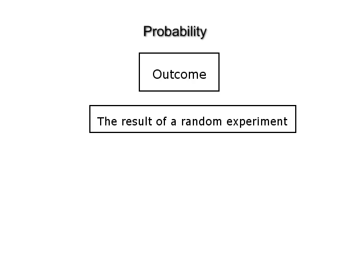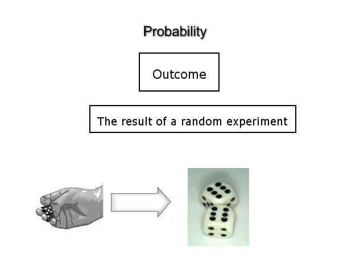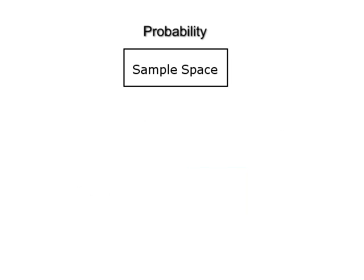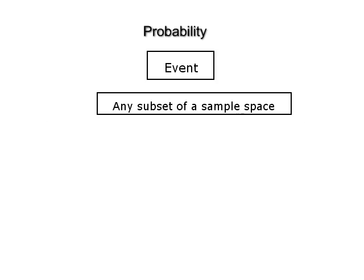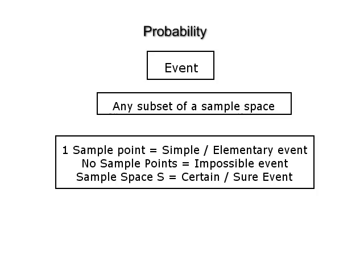Number 2: Outcome. The result of a random experiment is called an outcome. For example, in the experiment of throwing a die, getting a score of 6 can be considered as an outcome. Number 3: Sample space. The set of all possible outcomes of a random experiment is called the sample space and its elements are called sample points. A sample space is usually denoted by S. Number 4: Event. Any subset of a sample space is called an event. If an event contains only one sample point, it is called a simple event or an elementary event. If an event is the empty set, that is it does not contain any sample point, then it is called an impossible event. The sample space S is called a certain event or sure event.